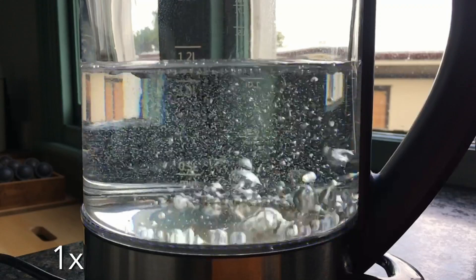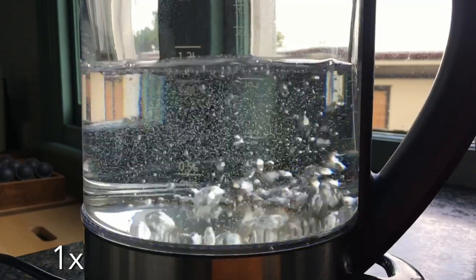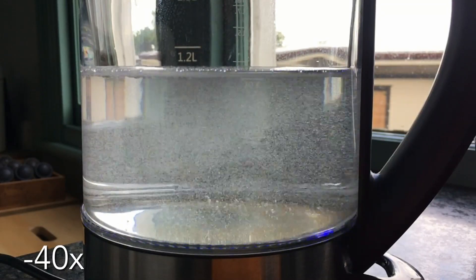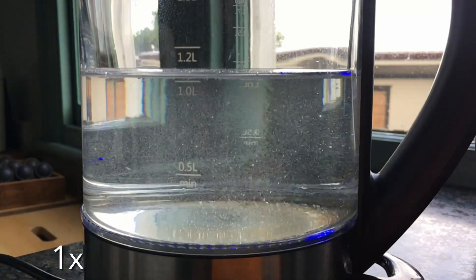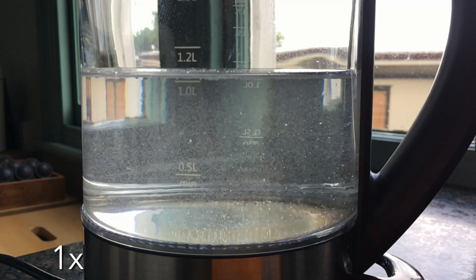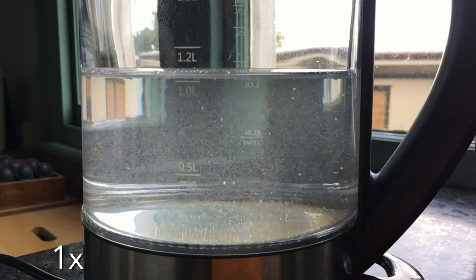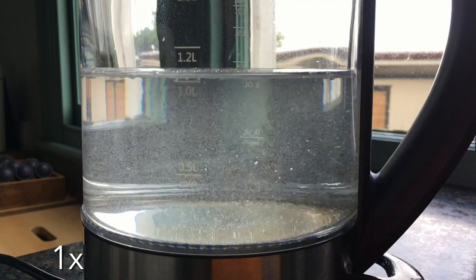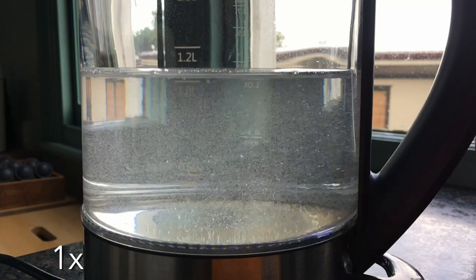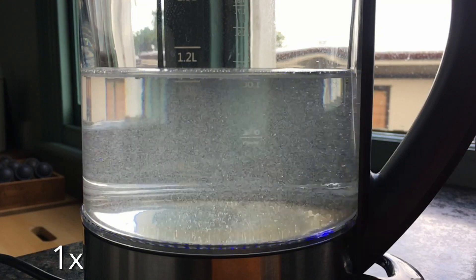Now you may have noticed something else going on inside the kettle as it got hotter. Let's rewind. Do you see how the water starts to get cloudy? These are tiny bubbles, but they're not forming at the element. That's because they're not made of water vapor. They're gases that were dissolved in the water.